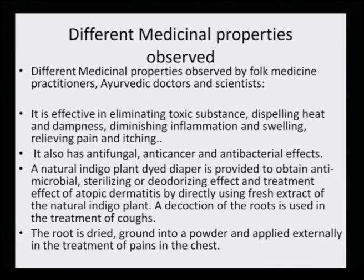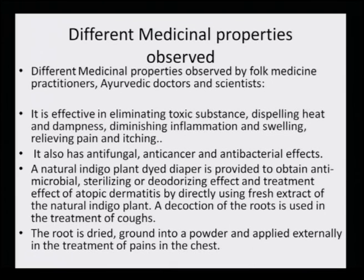A decoction of the root is used in the treatment of coughs. It is used for smearing on the diapers of children because it has antibacterial and antifungal properties and is very good for atopic dermatitis. The root is dried, ground into powder and applied externally in the treatment of pain in the chest. Some Ayurvedic and folk medicine practitioners found that this kind of application also helps with chest pain.